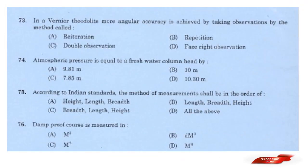Question: In a vernier theodolite, more angular accuracy is achieved by taking observations by the method called? Answer: Option B — Repetition. More angular accuracy in a vernier theodolite is achieved by the repetition method.